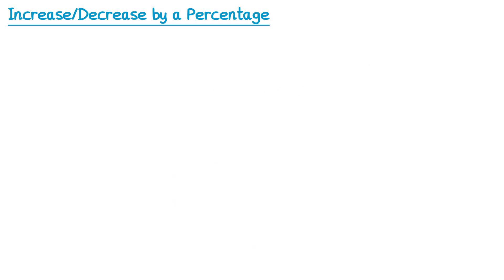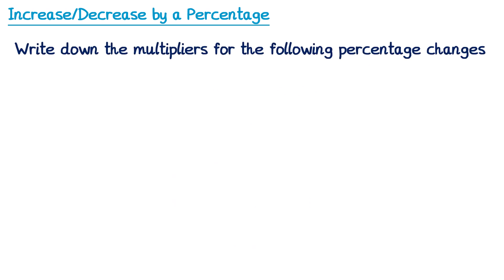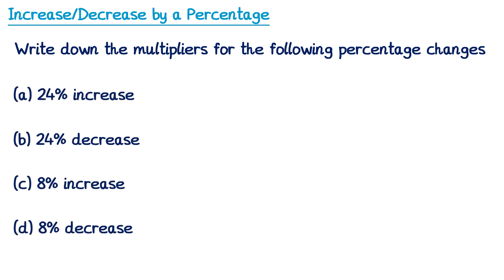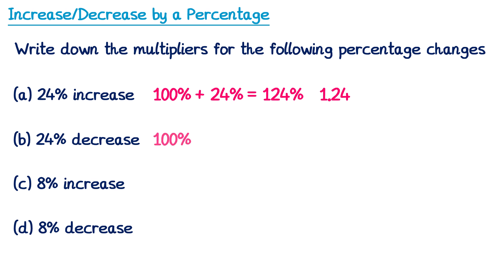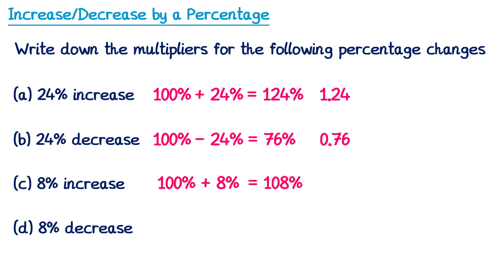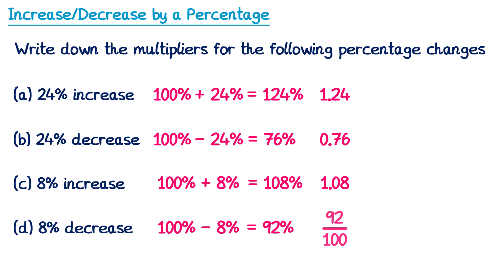Here's a question for you: write down the multipliers for the following percentage changes. For a 24% increase: 100% + 24% = 124%, divided by 100 = 1.24. For a 24% decrease: 100% − 24% = 76%, divided by 100 = 0.76. For an 8% increase: 100% + 8% = 108%, divided by 100 = 1.08. For an 8% decrease: 100% − 8% = 92%, divided by 100 = 0.92.